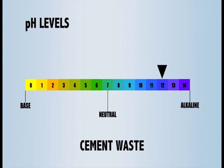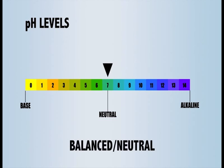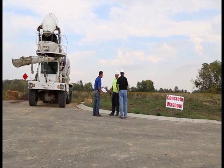Cement-based waste has a pH of around 12, while a product like Drano liquid drain cleaner has a pH of around 13.5. A pH of 7 is normal or balanced.